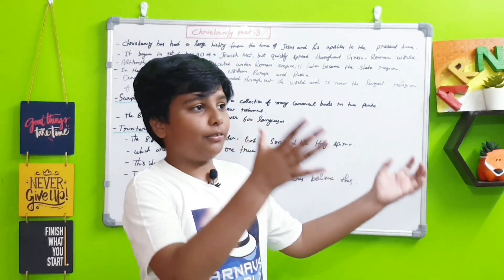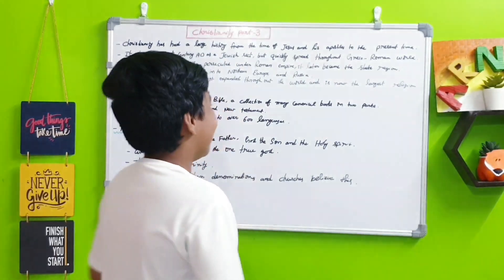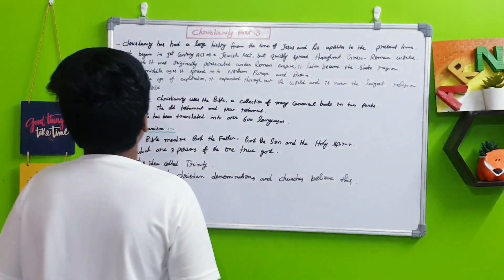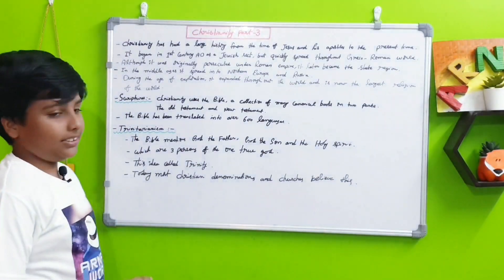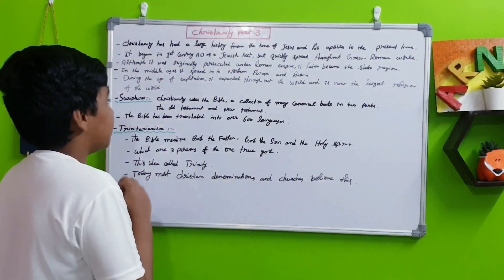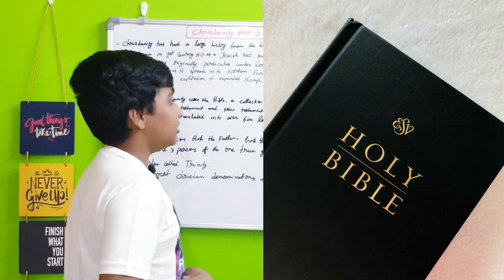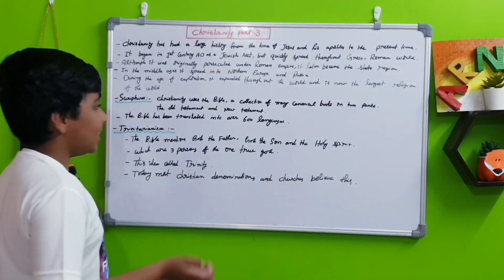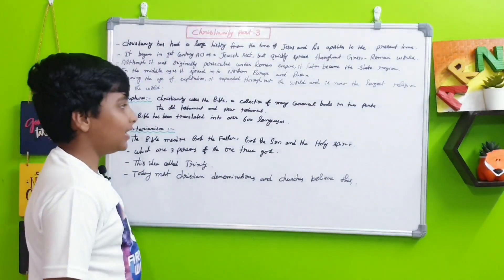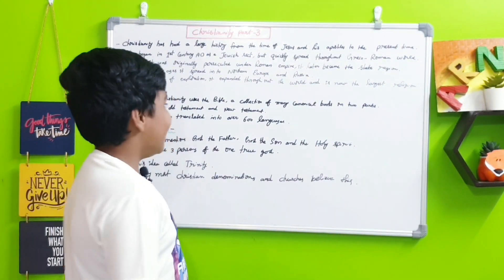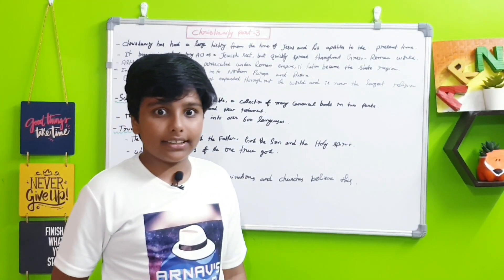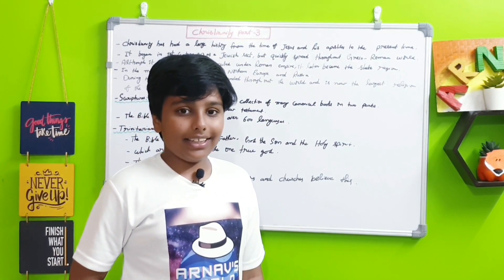Next, the scriptures. Christianity uses the Bible, which is a collection of many canonical books in two parts. These parts are known as the Old Testament and the New Testament. The Bible has been translated into over 600 languages, that is a lot of languages.